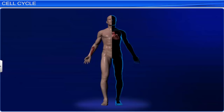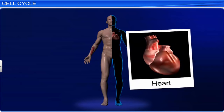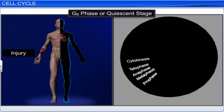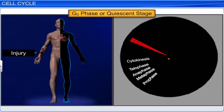In adult animals, for example in humans, some cells, like those in the heart, do not appear to display cell division. Animals also have many cells that divide occasionally, only to replace cells lost due to cell death or injury. Such cells that do not display further cell division exit the G1 phase and enter an inactive stage called the G0 phase, or the quiescent stage. Cells in this stage remain metabolically active, but proliferate only when the need arises.